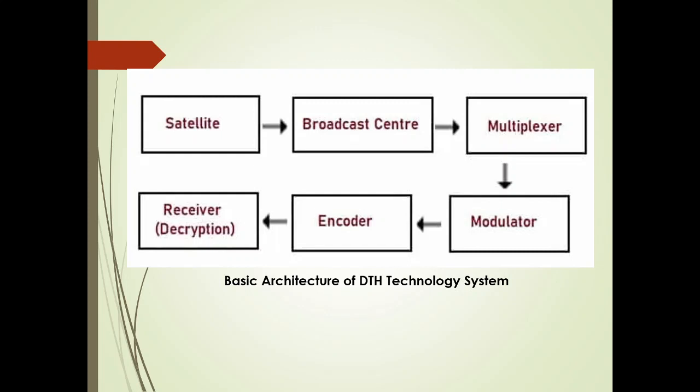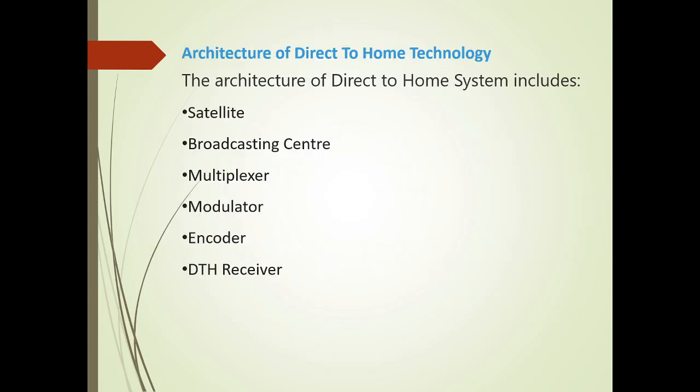The basic technologies involved in DTH go from the satellite towards the broadcast center, where all channels are multiplexed, then modulated, encoded, and transmitted via the transmitter. The transmitter transmits the signal; the receiver receives it, decrypts it, and we can view it on the monitor. Broadly, the system involves: satellite system, broadcasting center, multiplexer, modulator, encoder, and the DTH receiver.